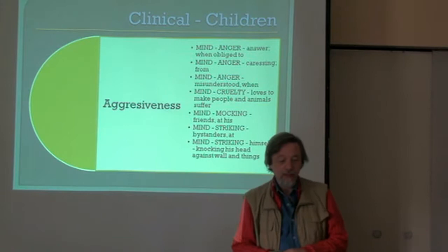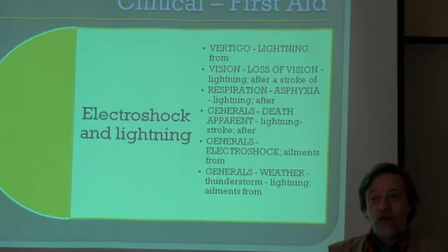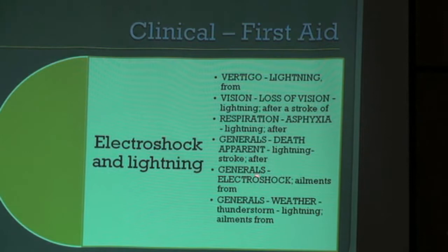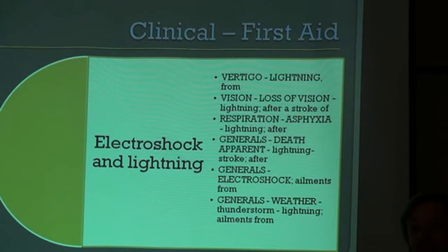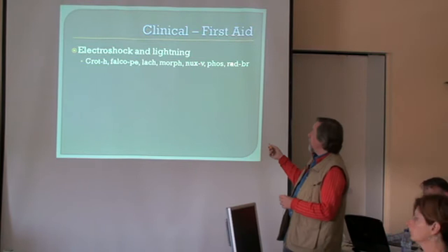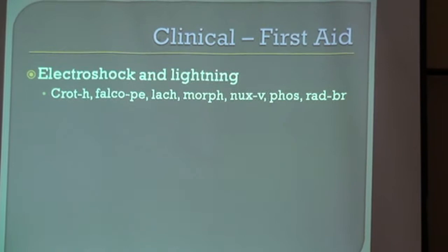The next example is first aid. I have chosen electro-shock and lightning. Many people would say: is that in the repertory? Well, electro-shock is in the repertory — the rubric is under Generals, 'ailments from electro-shock.' But there are also other places, such as respiration and even in the chapters on vision and vertigo, where there are effects of lightning. We combined remedies specifically affected by electro-shock and lightning into a clinical chapter. Morphinum has been known for a long time for such situations, and even Falco Peregrinus is there as a more recent remedy.